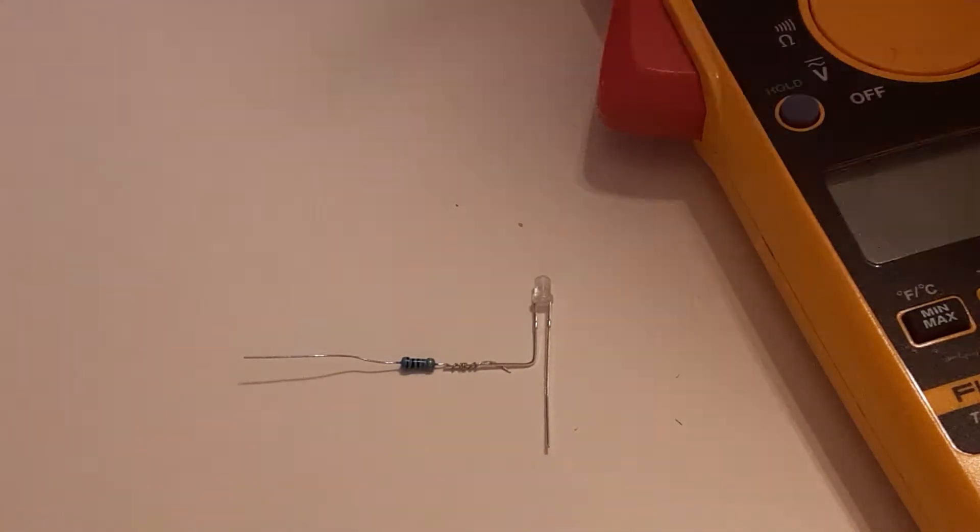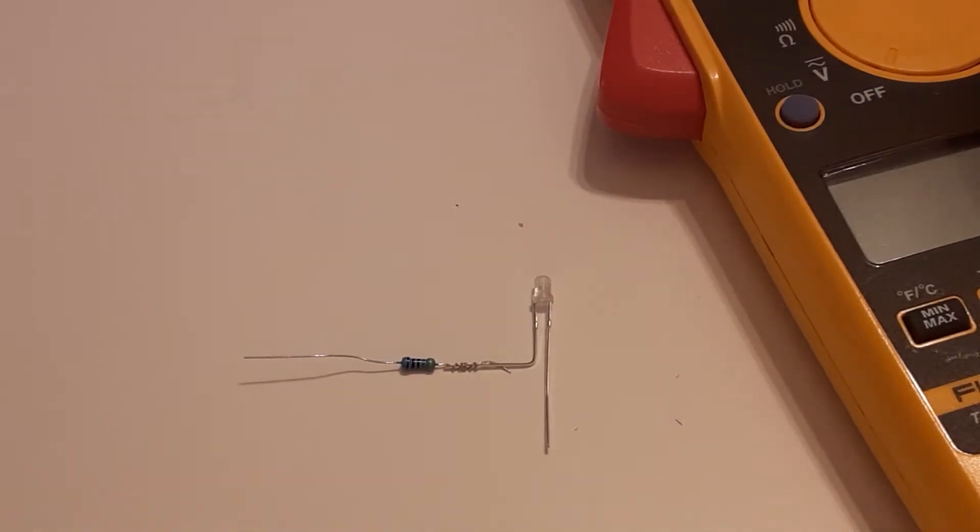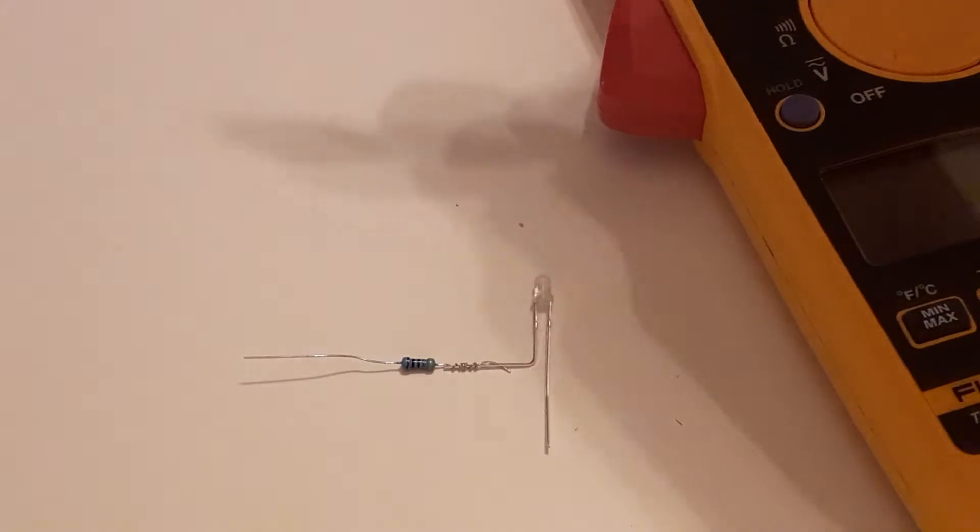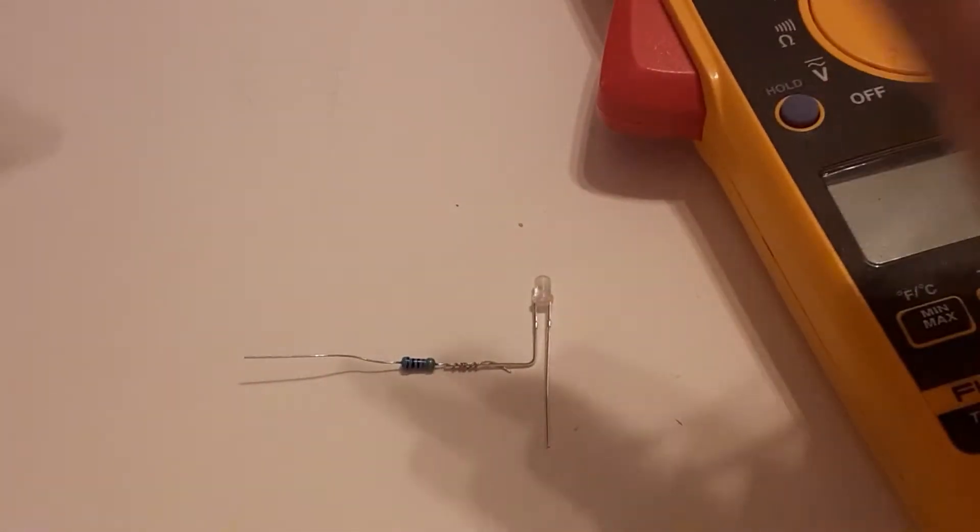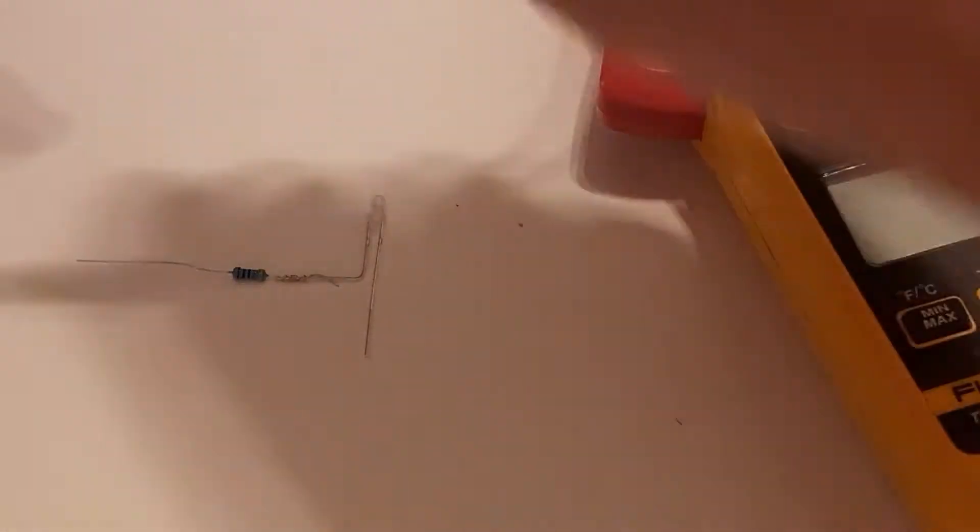The resistor that came with it says it's 430 ohms. So we'll check that here in just a second. Let's put some power on this and see if it lights up. Hopefully it lights up.